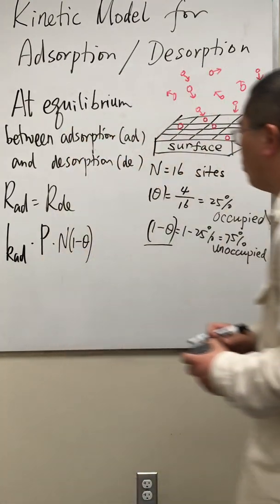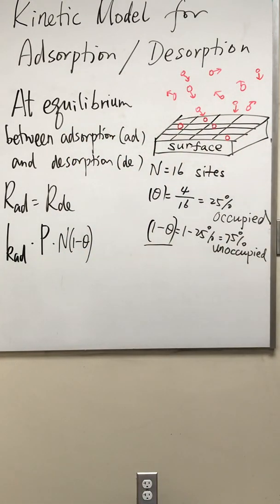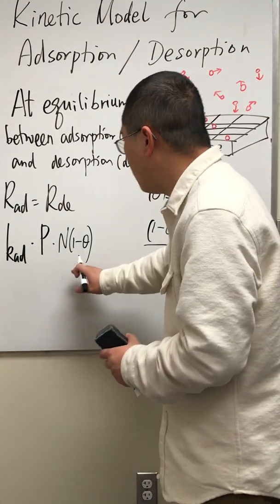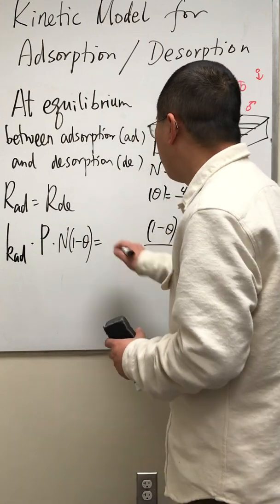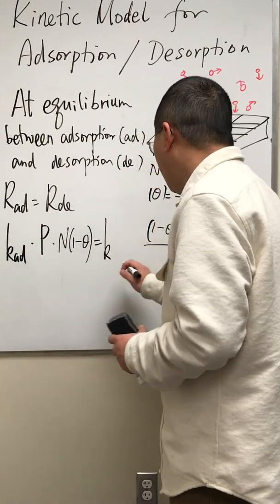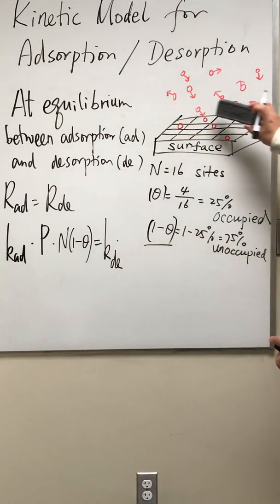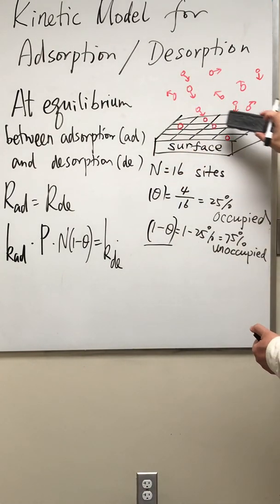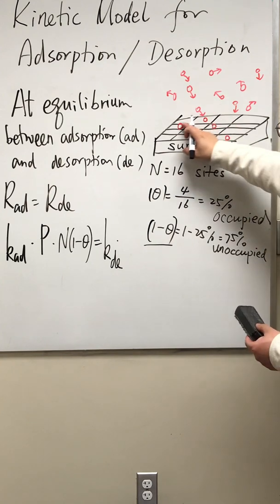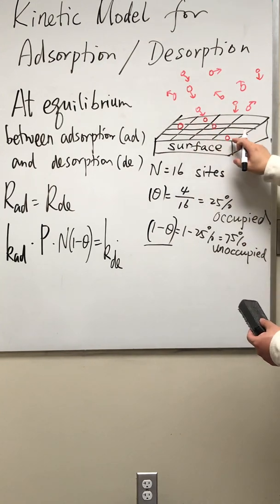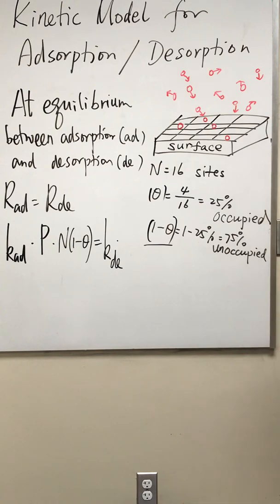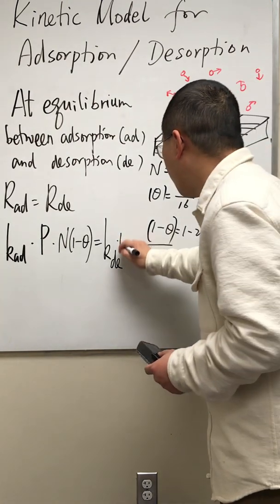So N times one minus theta gives you the number of unoccupied sites. Again, N is the total number of sites. So this is the adsorption rate equal to the desorption rate. Again, I'm going to use K, the rate constant for desorption. This time it only depends on the number of occupied sites, one, two, three, four. Only these four red circles may undergo desorption, so times N times theta.